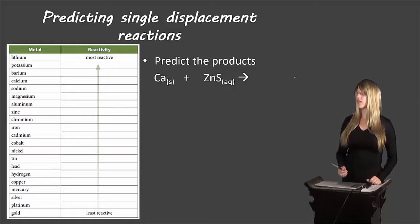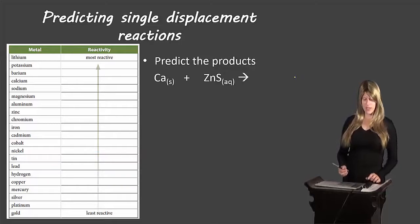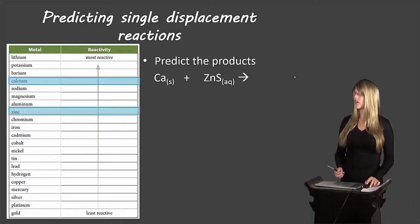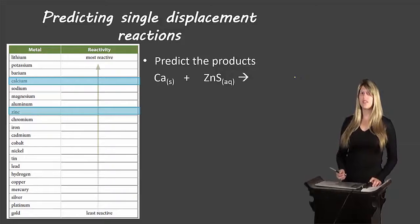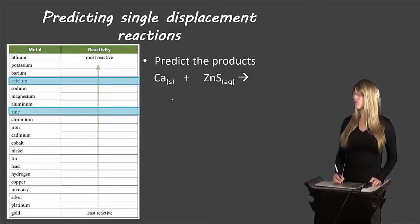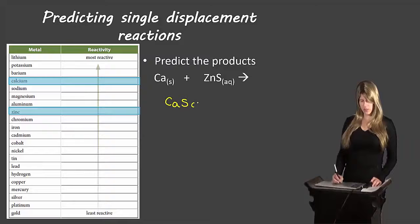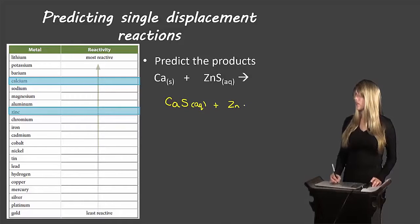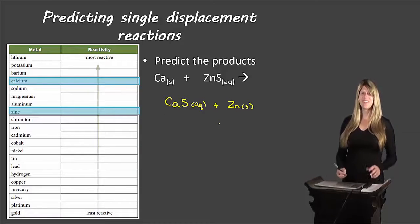Example three: calcium and zinc sulfate. Calcium comes above zinc on the reactivity series, which means calcium is able to displace zinc. We end up with calcium sulfate as an aqueous compound and zinc on its own. This equation is already balanced.